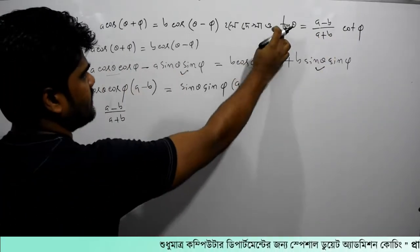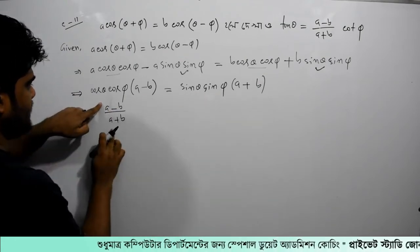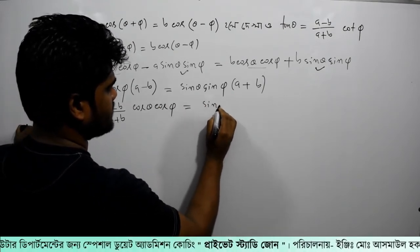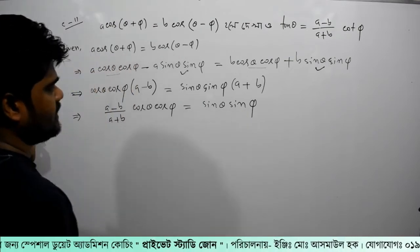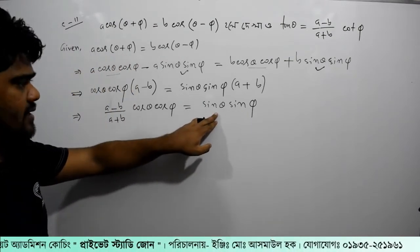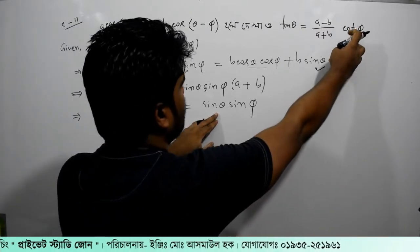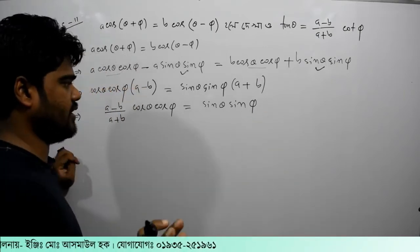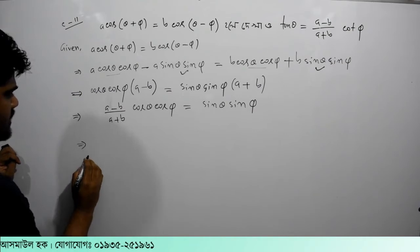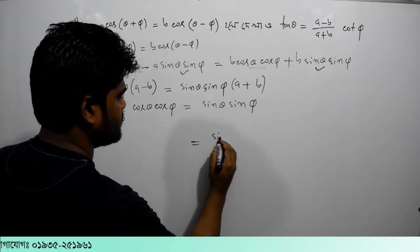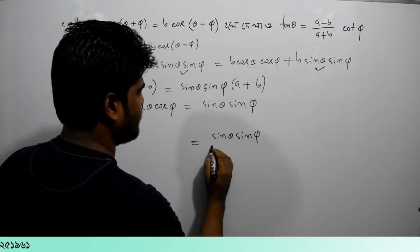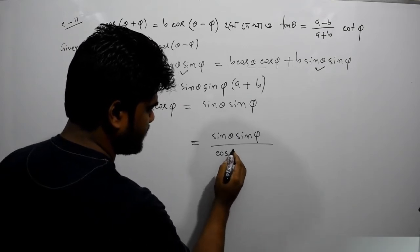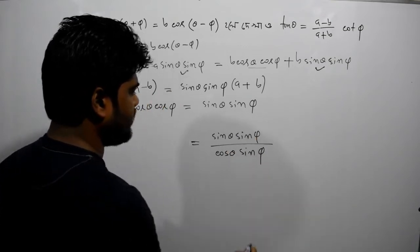And this is tan. Here we have the difference. Cos theta cos phi equal to sin theta sin phi. We have the difference here. So we will take tan theta. We will take sine phi. So we will take this to get tan theta. Cos theta — this is how we will get tan theta.